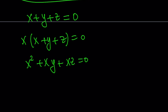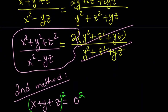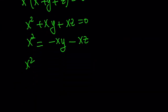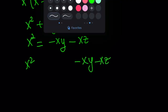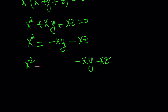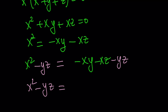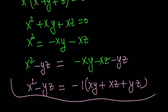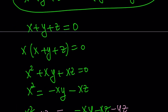Here's the tricky part: I want to isolate x squared. So x squared equals negative xy minus xz. Now I need to get to x squared minus yz, so I subtract yz from both sides. I'm missing yz with a negative sign on the right-hand side, so subtracting yz gives x squared minus yz equals negative xy minus xz minus yz. I can factor out a negative sign: x squared minus yz equals negative one times the quantity xy plus xz plus yz.